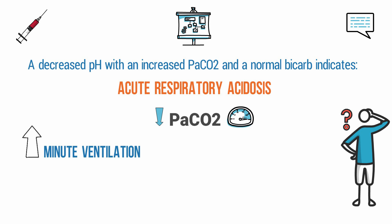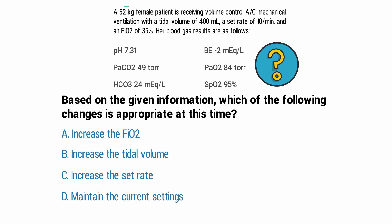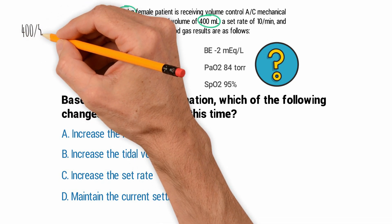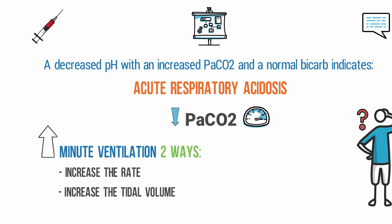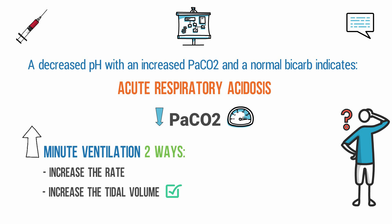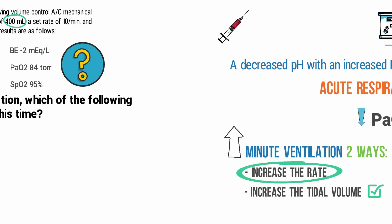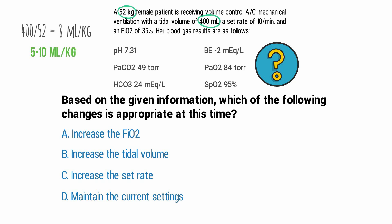How can we increase the minute ventilation? There are two ways: increase the rate or increase the tidal volume. The patient weighs 52 kilograms and the set tidal volume is 400 milliliters. Dividing 400 by 52 equals approximately 8 milliliters per kilogram, which falls within the appropriate range of 5 to 10 milliliters per kilogram — meaning the tidal volume is set correctly. Since the tidal volume is already appropriate, there is only one possible way to increase the minute ventilation: we need to increase the rate. The correct answer is C, increase the set rate.